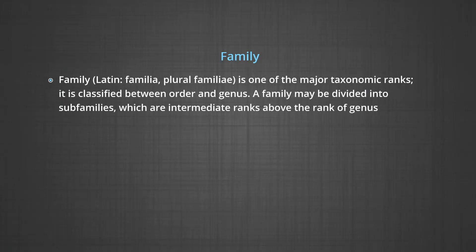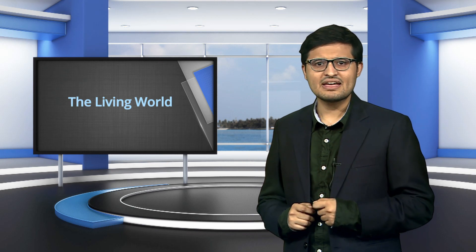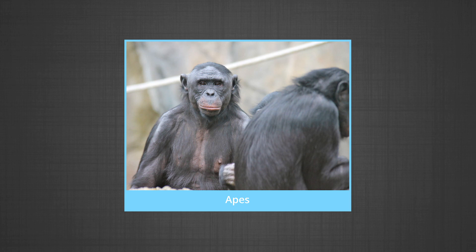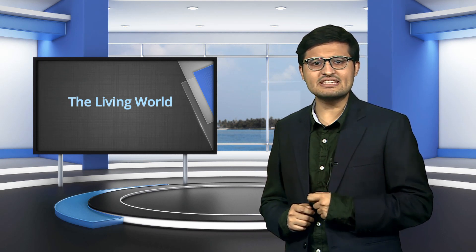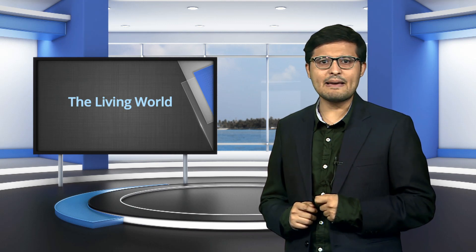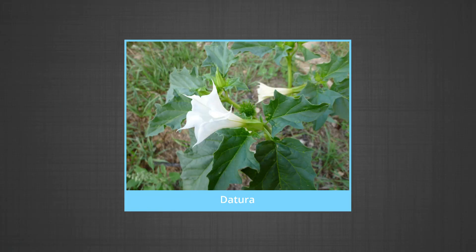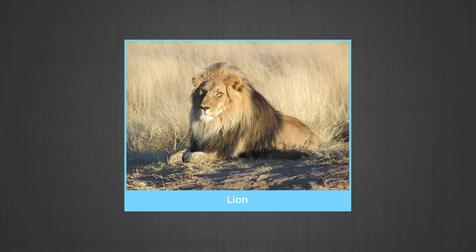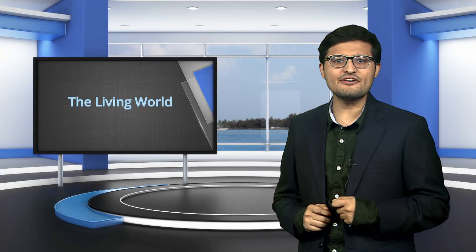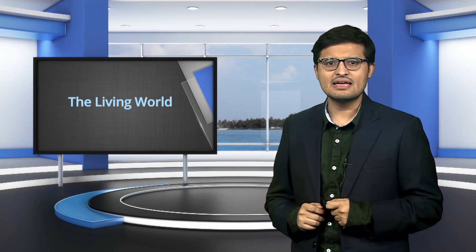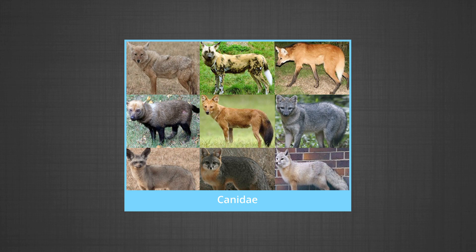Family is one of the major taxonomic ranks, classified between order and genus. A family may be divided into sub-families, which are intermediate ranks above the genus. Families are categorized on the basis of both vegetative and reproductive features of plant species. Among plants, three different genera — Solanum, Petunia and Datura — are placed in the family Solanaceae. Among animals, genus Panthera, comprising lion, tiger and leopard, is grouped with genus Felis (cats) in the family Felidae. Cats and dogs, having similarities and differences, are separated into families Felidae and Canidae respectively.